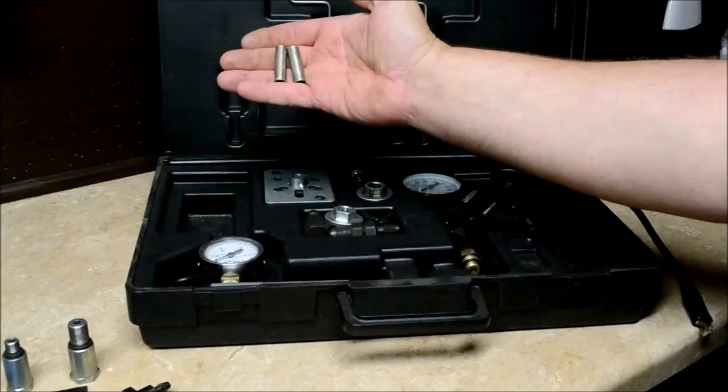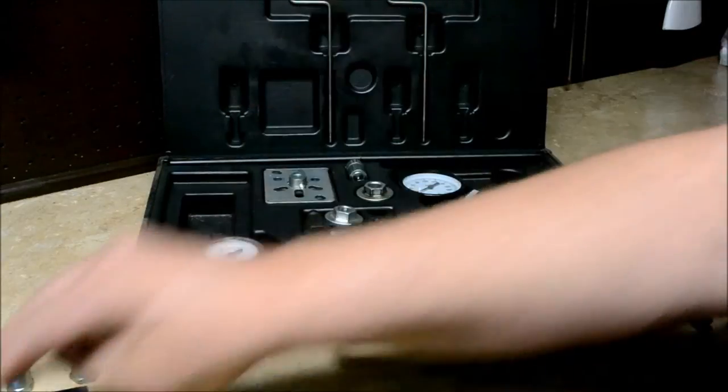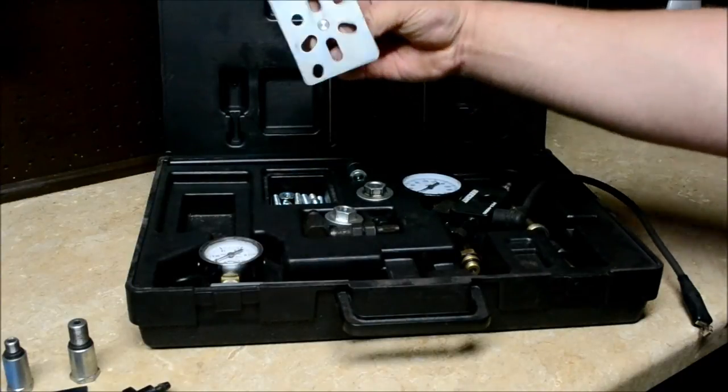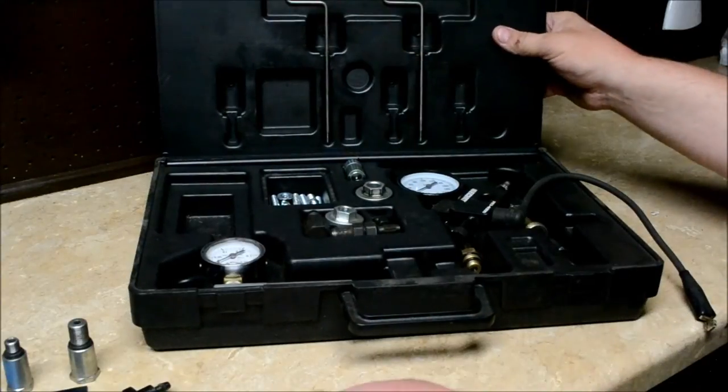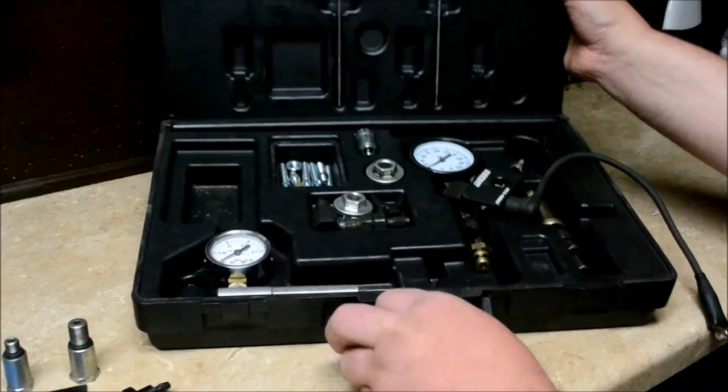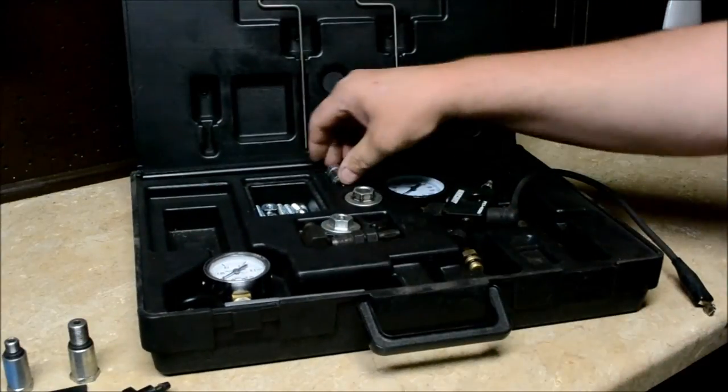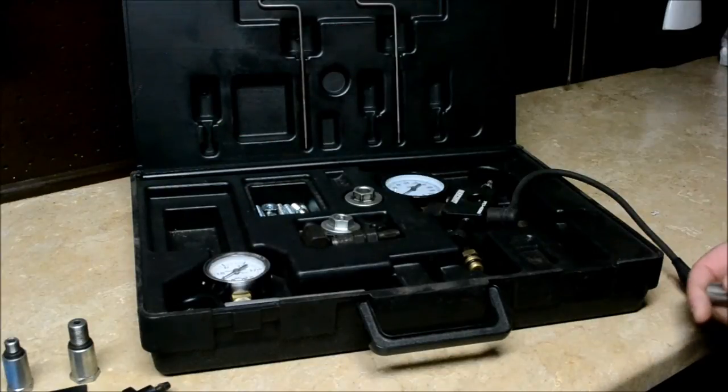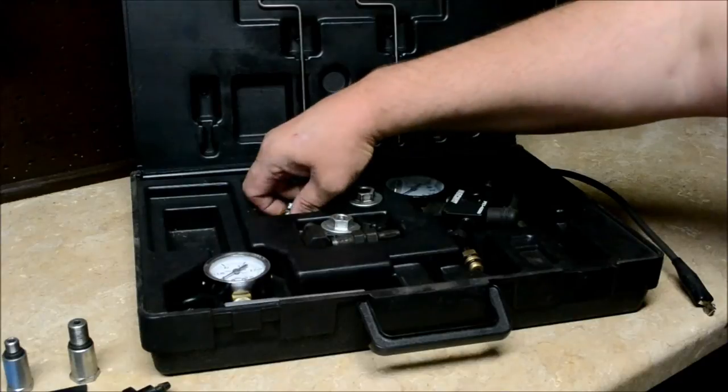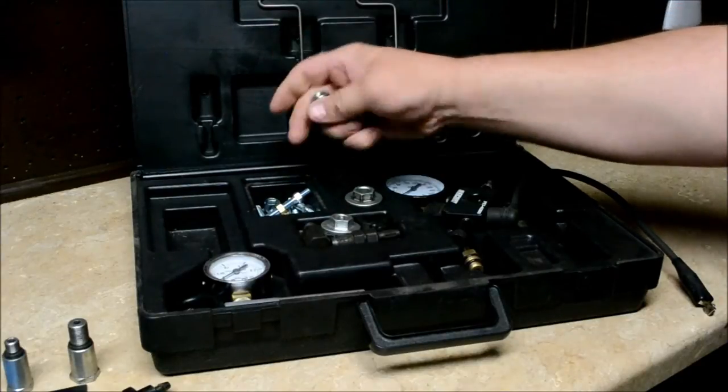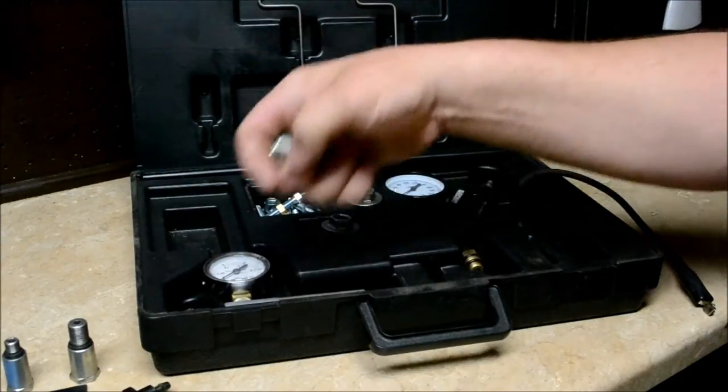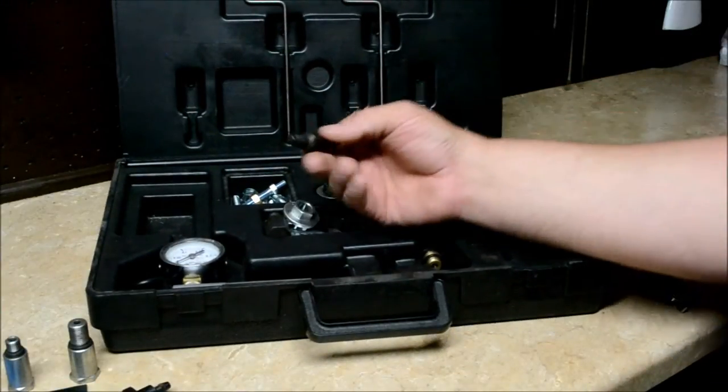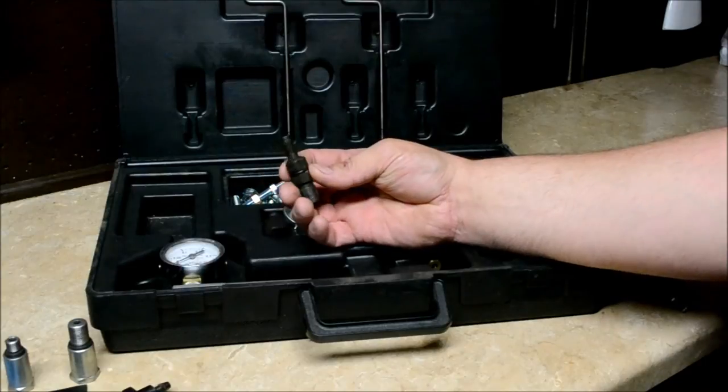Moving along, we have the flywheel puller and all of the attaching bolts right here. This goes on the forcing screw of the flywheel puller. If you put these down on the flywheel, it keeps it from barring up the flywheel. I did not buy this - I mean this did not come in the kit. I bought this separately.